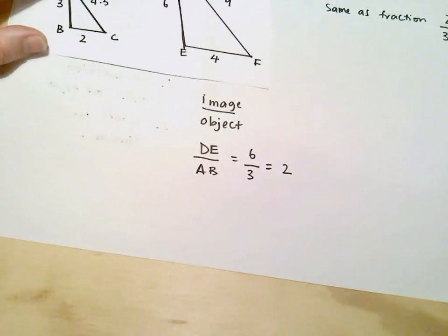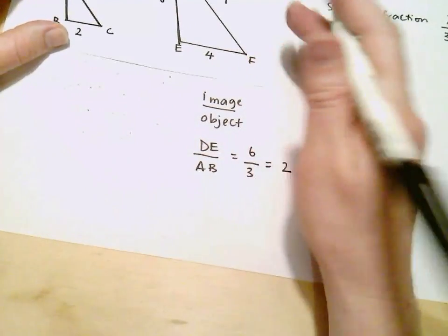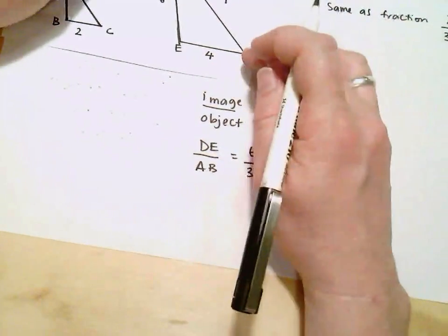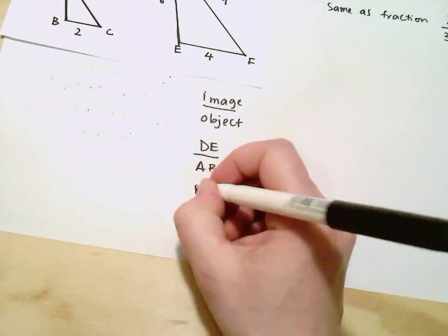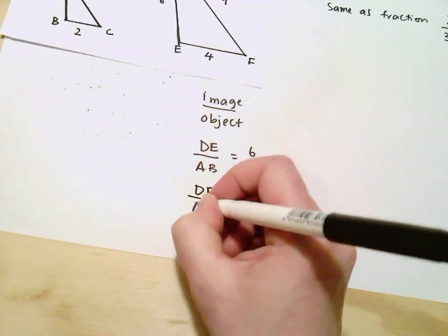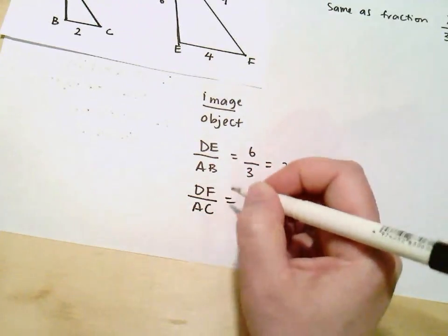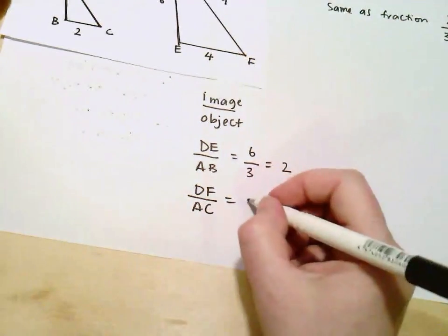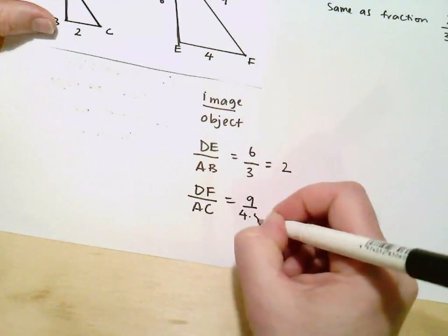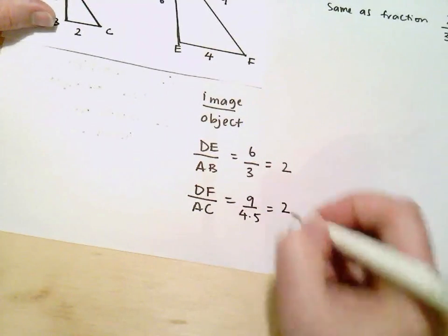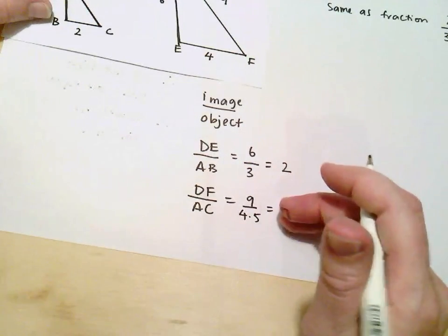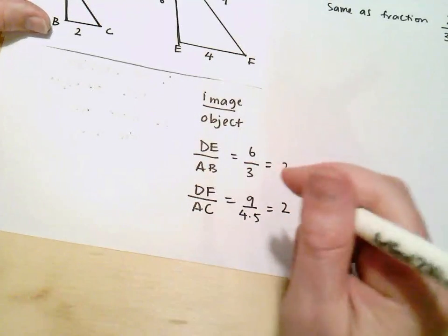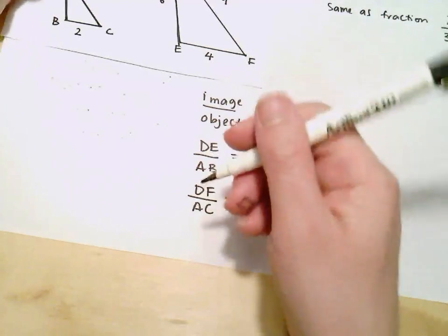Now I look at the ratio of another pair of matching sides, DF and AC. So I say DF and AC. What's the ratio of those two? Well, DF is 9 and AC is 4.5. 9 divided by 4.5 is 2. So, so far, so good. These numbers are the same. But I have to check all matching sides are in ratio. So I do my last one.